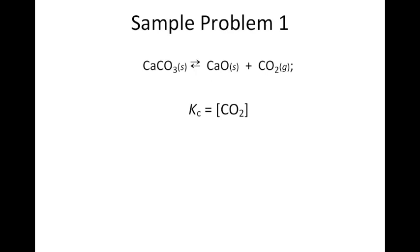For the first reaction, we have a reactant that is a solid, a product that is a solid, and a product that is a gas. Since we don't include pure solids, this equilibrium constant expression simplifies to just Kc equals the concentration of CO2. Both the solid reactant and the solid product are excluded, so it simplifies to that single term.